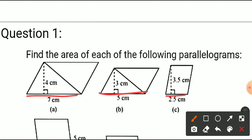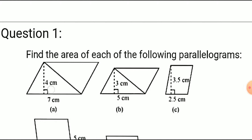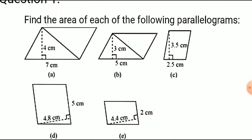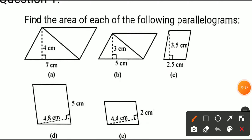In all these questions, first you have to identify what is base and what is height. The dotted lines represent the height or altitude, and the other side is the base. For example: 4 into 7 is 28; 3 times 5 is 15; and 2.5 into 3.5 you multiply similarly. Calculate area using these values.